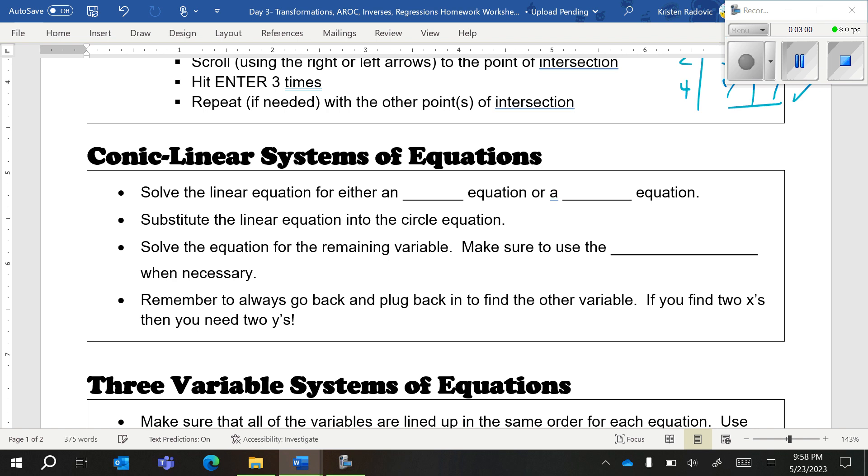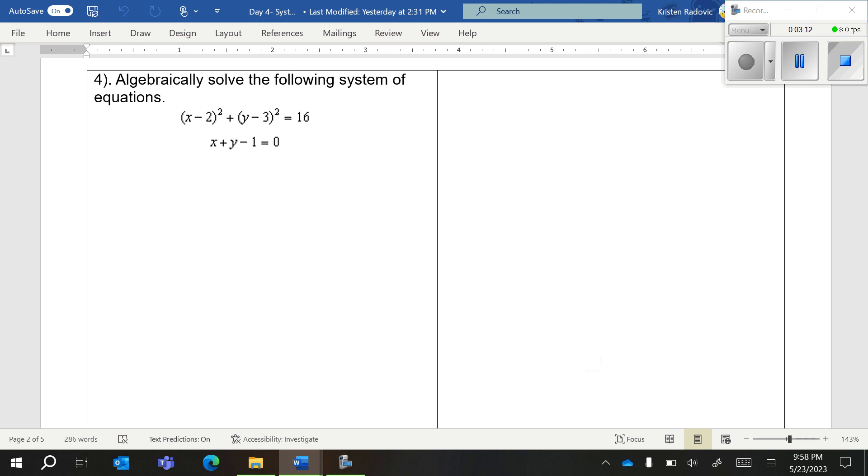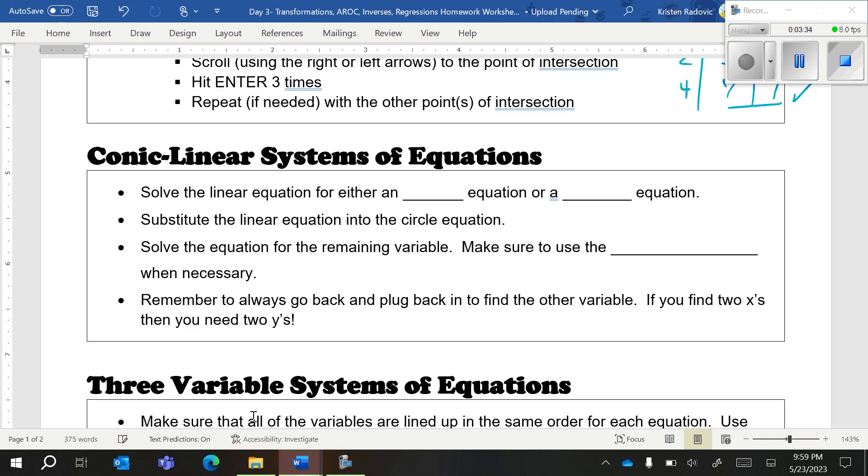Going on to conic linear systems of equations. Let me pull up a good conic linear system for you. This is a conic linear system. This one is the circle, the conic, and this one is the linear one. You're always going to start with the easier one, and the easier one is the one without exponents. You're going to start the easy one and you're either going to get x by itself or you're going to get y by itself.